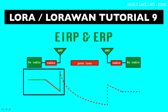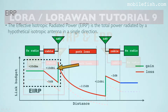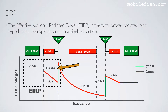In this tutorial I will explain what EIRP and ERP are. The Effective Isotropic Radiated Power, or EIRP, is the total power radiated by a hypothetical isotropic antenna in a single direction. The EIRP is the transmission power plus the antenna gain minus the cable loss, and the value is expressed in the unit dBm.